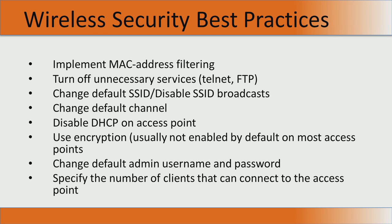Some best wireless security practices when you have a WLAN include: implement MAC address filtering, turn off unnecessary services, change the default SSID, change the default channel, disable DHCP on the access point, change the default admin username and password, and specify the number of clients that can connect to the access point. These are all important best practices for wireless security.